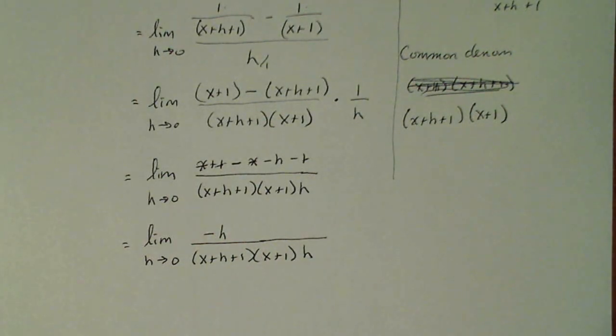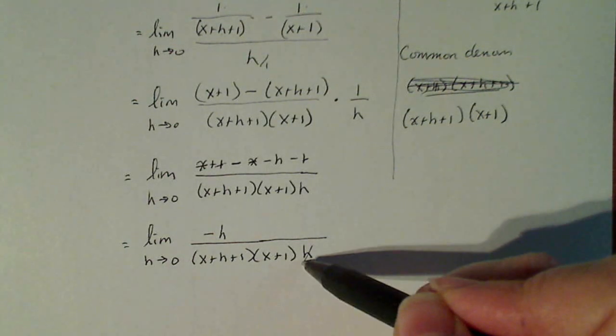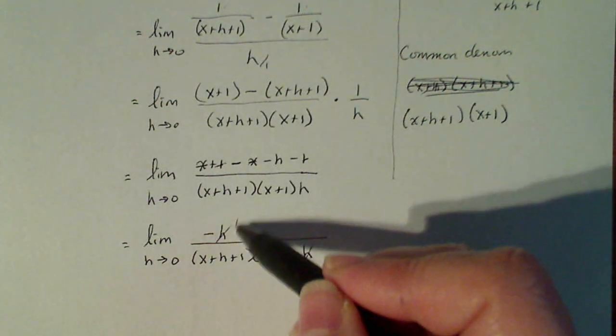Now, no matter how much you want to, do not multiply out the denominator, because you can now see that h and h cancel, and I'm left with -1 in the numerator.